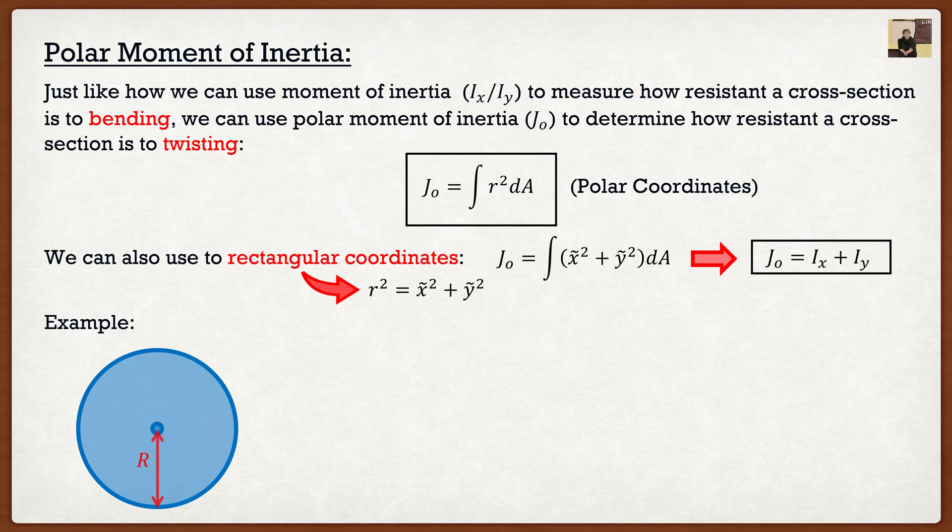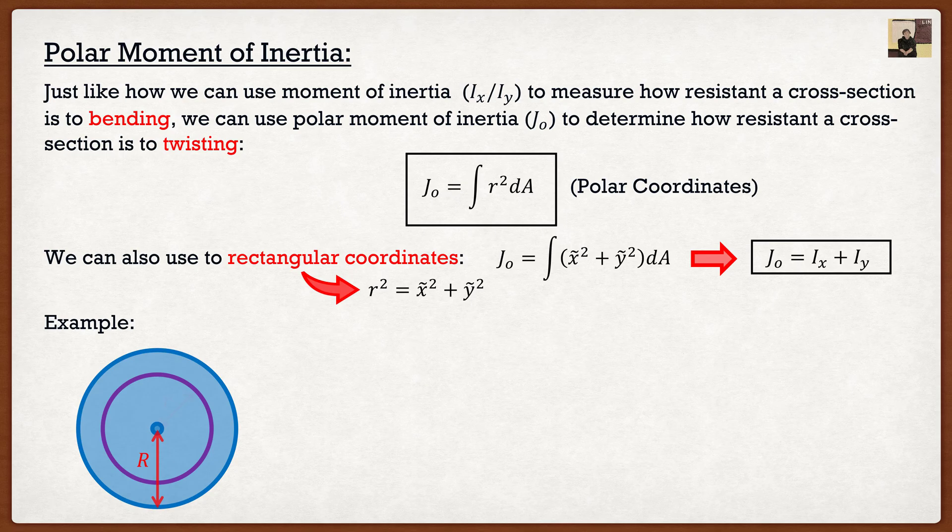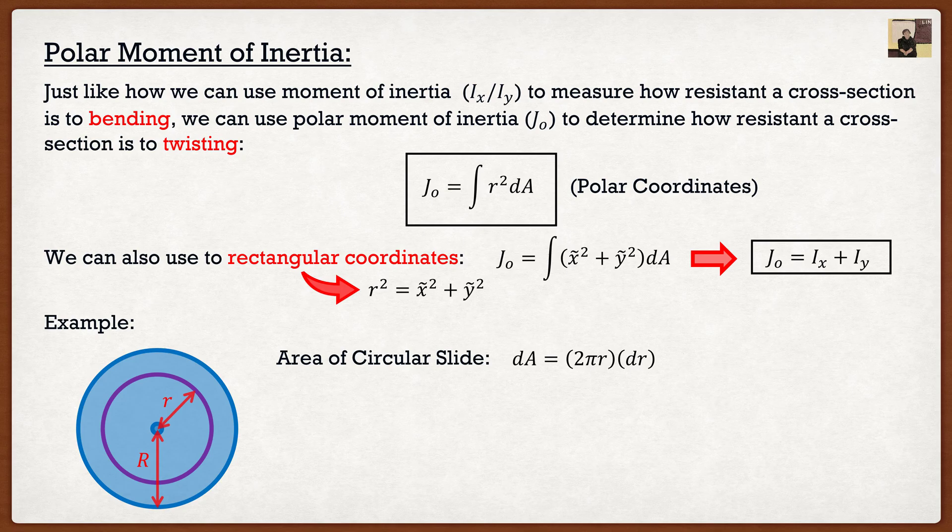So if I were to look at my shape here, what I can do is I can take a nice little slice around. And we're going to say that this slice is located at a distance r. Now if I want the area of my circular slice, it's going to be the circumference times the thickness. So two pi r, circumference times the thickness, which we know is dr. We want that thickness to be basically minuscule.